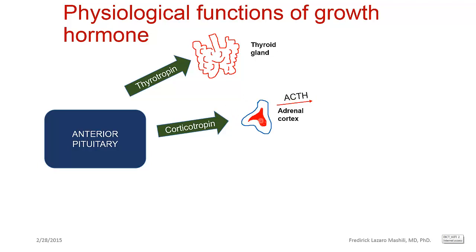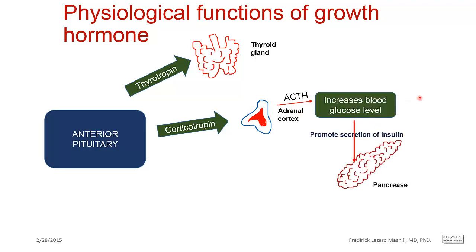The function of ACTH is to stimulate the adrenal cortex to produce hormones such as cortisol and androgens. One function of cortisol is to increase blood glucose levels. When you have increased glucose levels in the blood, you have stimulation of beta cells of the pancreas to produce insulin.